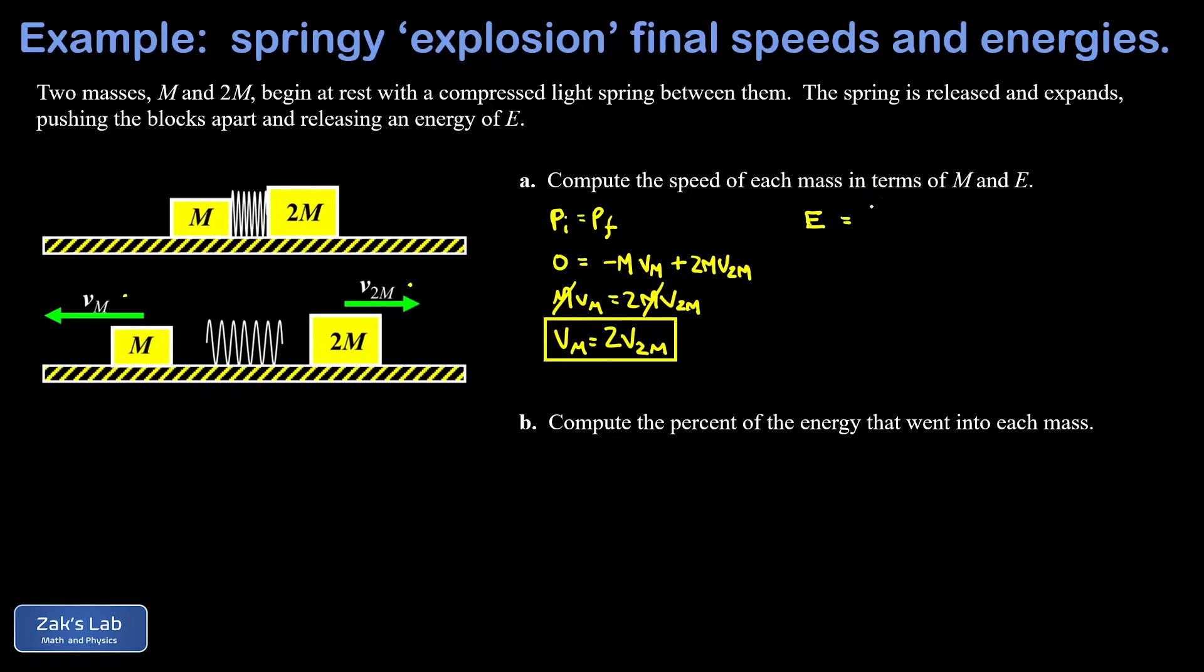So for our mass m that's a one-half m vm squared. For our mass 2m that's a one-half times 2m times its speed squared v2m squared. And we can make a substitution into this equation. We have a relationship between vm and v2m from our momentum equation so we'll just replace vm with 2v2m.